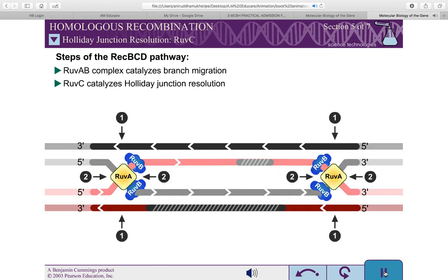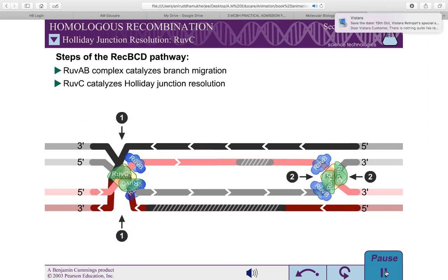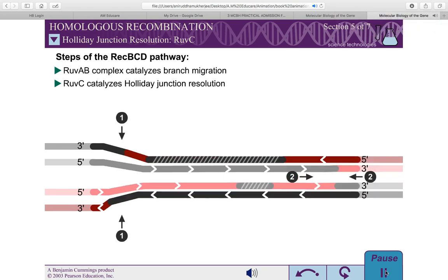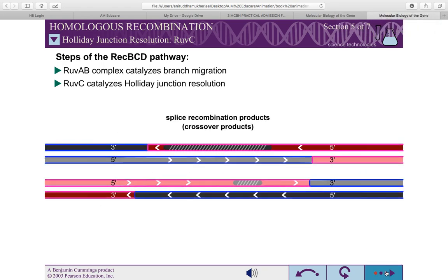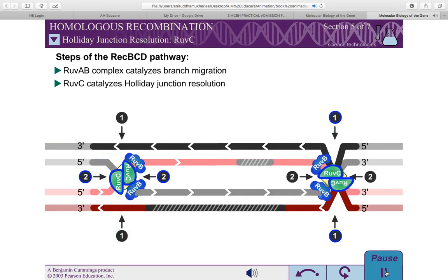If the junctions are cleaved at different sites, splice recombination products result. For example, if the first junction is cleaved at Site 1 and the second junction is cleaved at Site 2, splice recombination products result. Splice recombination products also result if the first junction is cleaved at Site 2 and the second junction is cleaved at Site 1.